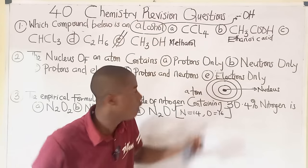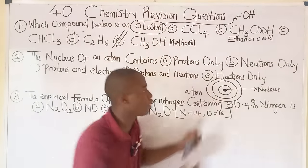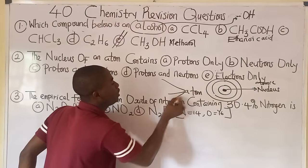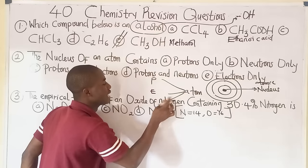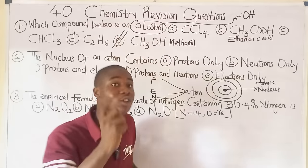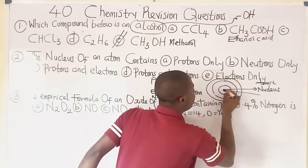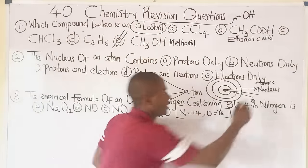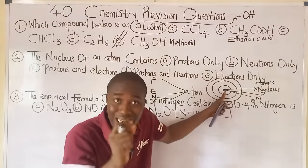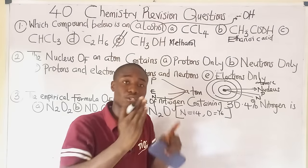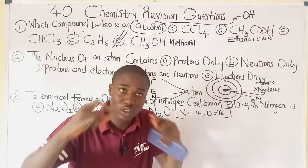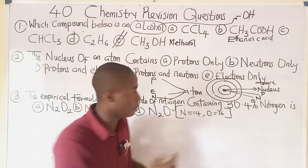An atom is made up of three subatomic particles: protons, electrons, and neutrons. However, only two of these are found inside the nucleus of an atom — protons and neutrons. Please jot this down as you watch, so you can study your notes after the lesson to help in your exam.